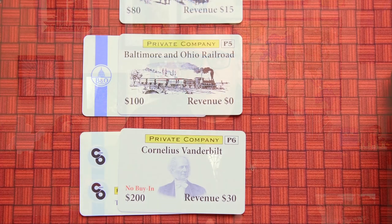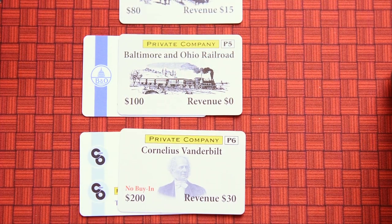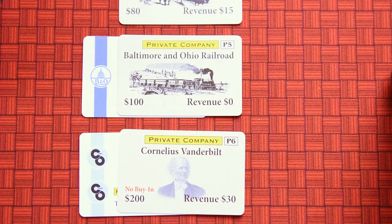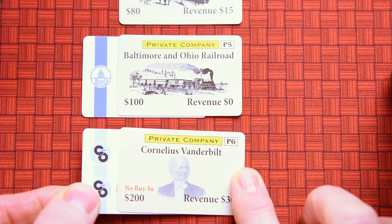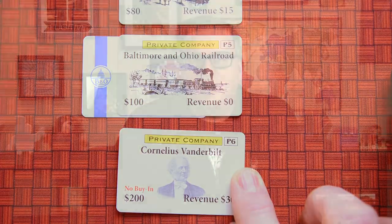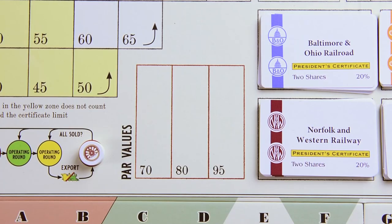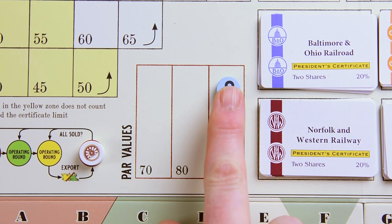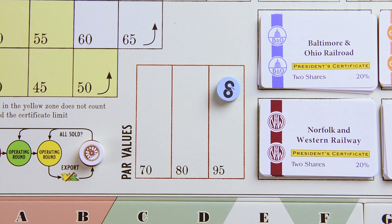Special note: whoever wins P6, the Cornelius Vanderbilt auction, must set the par price of the company associated with this private. Mark it by placing the appropriate marker for the company in the desired par value box on the board.